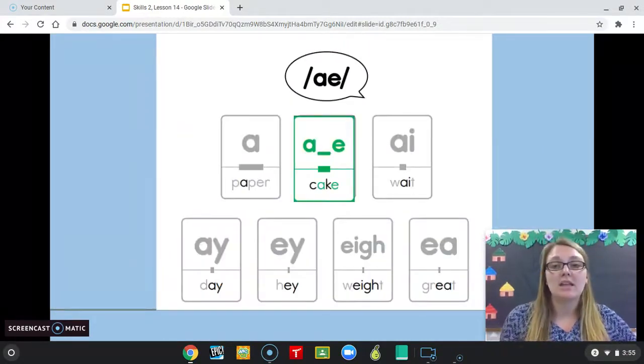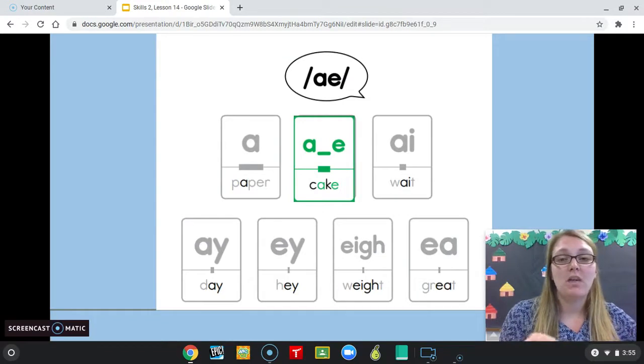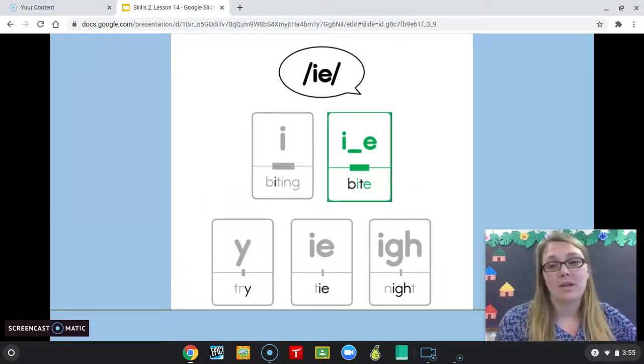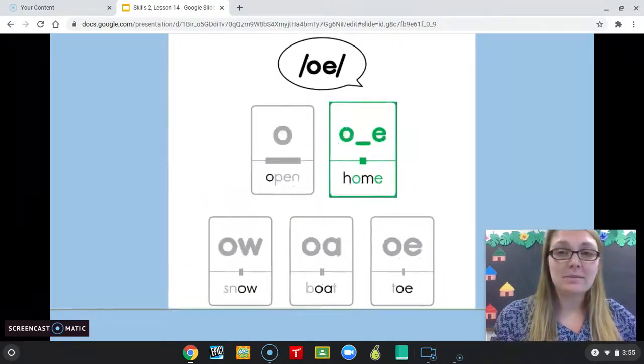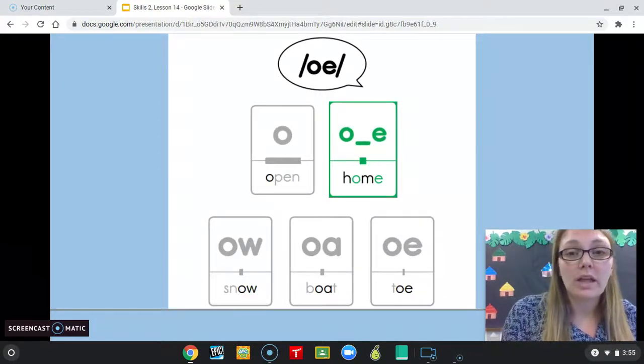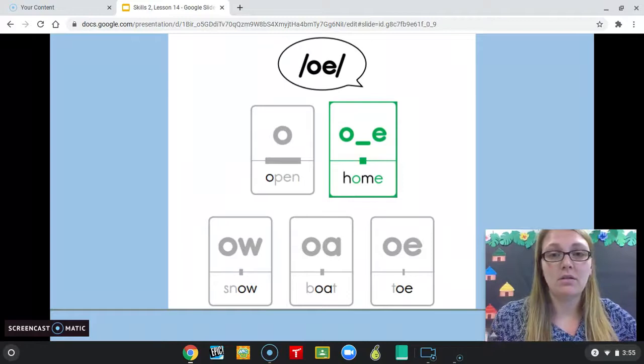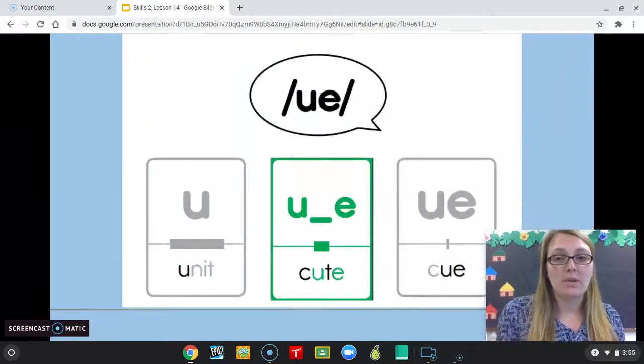Long A sound like in cake, which is an A with a consonant and then a magic E at the end. I, like in bite - I with a consonant and a magic E at the end. O like in home - again O with a magic E at the end, consonant in the middle. U, again the U with the magic E at the end, making the U sound.